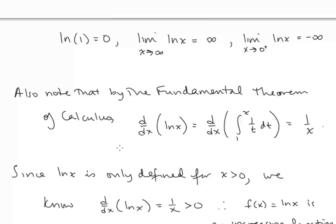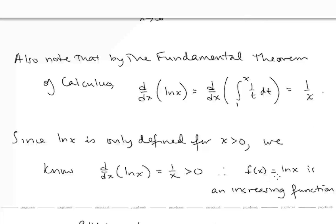Also, note that by the fundamental theorem of calculus, we can find the derivative of ln x very simply. The derivative of the integral from 1 to x of 1 over t dt is going to be 1 over x. So the derivative of ln x is 1 over x. Since ln x is only defined for x positive, 1 over x is also always going to be positive, which says that f of x is an increasing function.